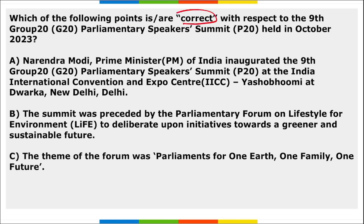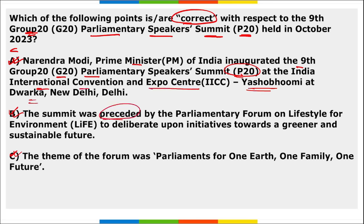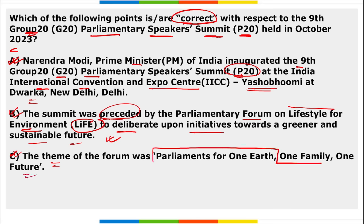Next, which among the following are correct with respect to the 9th G20 Parliamentary Speaker Summit P20 held in October? All three options A, B, C are correctly mentioned. Prime Minister Narendra Modi inaugurated the 9th G20 Parliamentary Speaker Summit P20 at the India International Convention and Expo Centre — Yashobhoomi in Dwarka, New Delhi. The summit was preceded by the Parliamentary Forum on LiFE — Lifestyle for Environment — to deliberate on initiatives toward a greener and sustainable future. The theme was 'Parliaments for One Earth, One Family, One Future.'